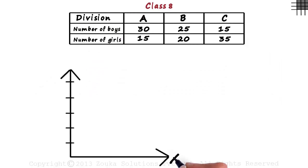So we make the x and the y axis and choose a scale of 1 centimeter equal to 10 boys on the y axis.